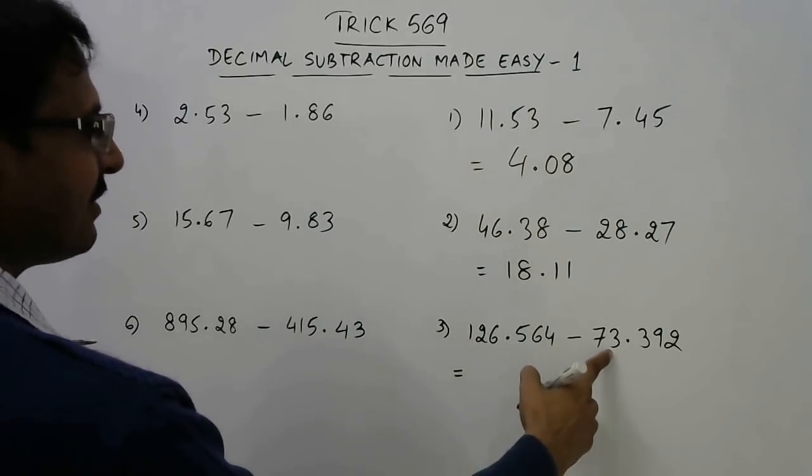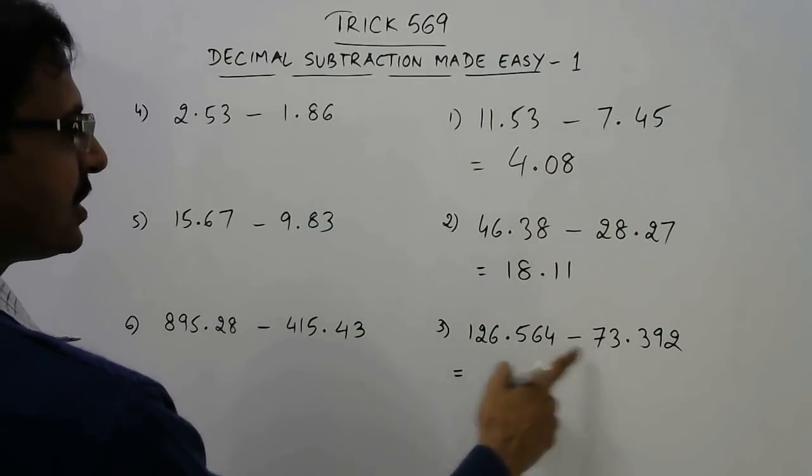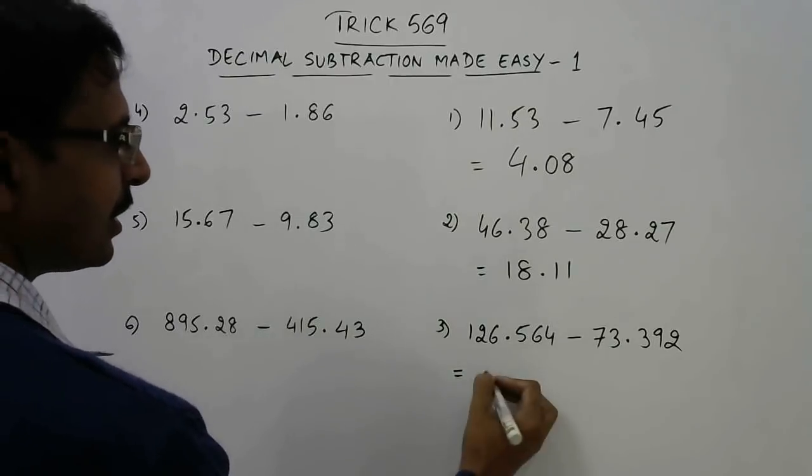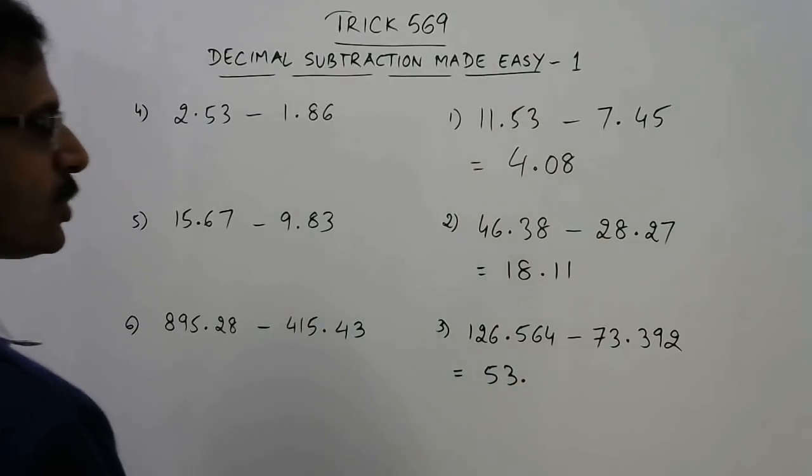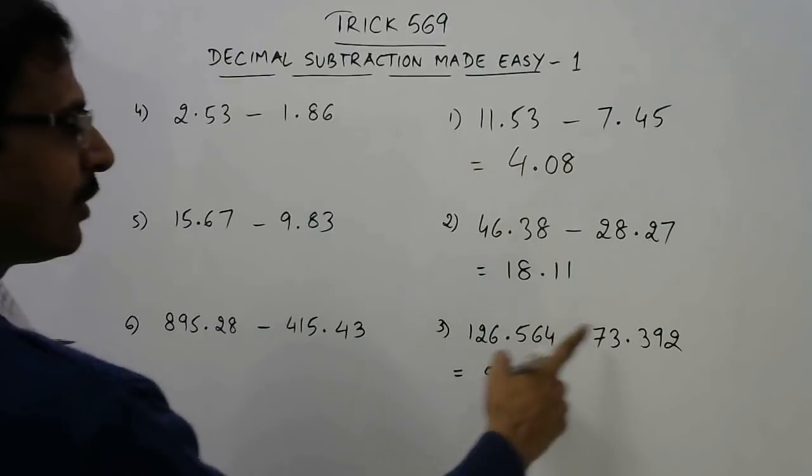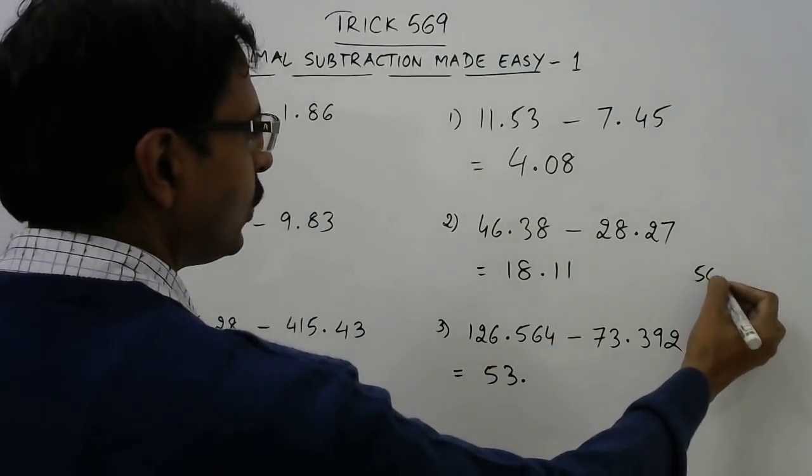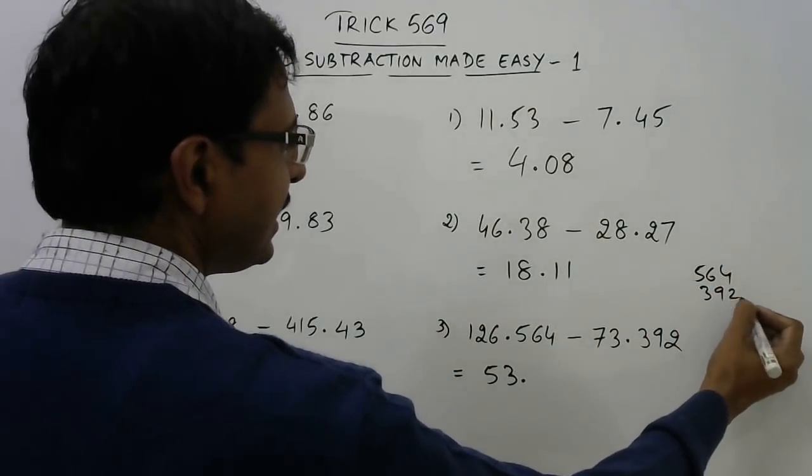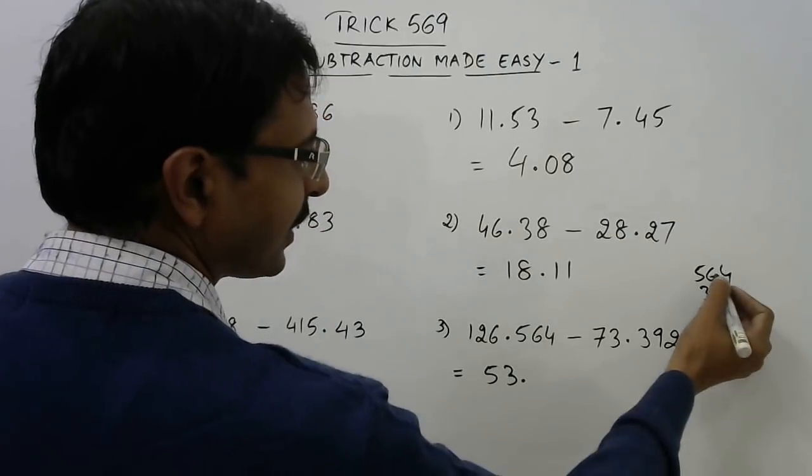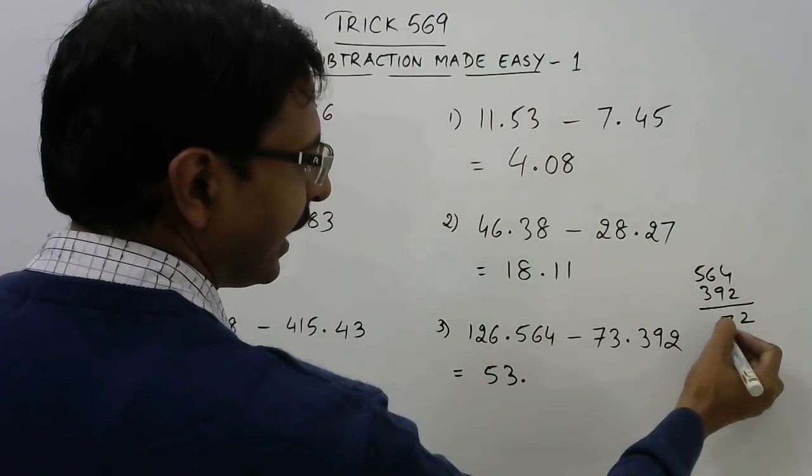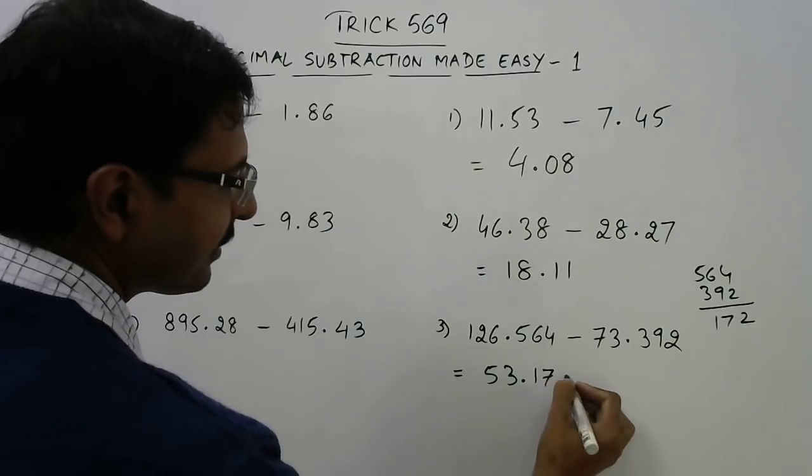Similarly here, 126 and 73, so this is 53 point. And you need to subtract 392 from 564, that you can do in the rough work very easily. So this will be 2 7 and 1, so 172 will come after the decimal place, thereby giving you the difference of the two numbers.